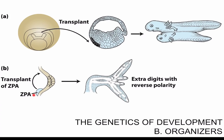One clear implication from these organizers was that they must be secreting chemicals that can signal to other cells to organize themselves into patterns — to form other embryos or other digits, as the case may be. These chemicals came to be known as morphogens. However, there was not much progress in understanding development until scientists started taking a genetic approach, discovering which genes controlled development, what proteins those genes coded for, and how those proteins worked. It is when this genetic approach was adopted that we got a deeper understanding of development.